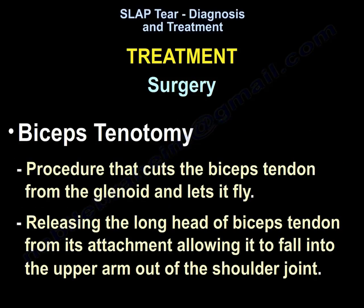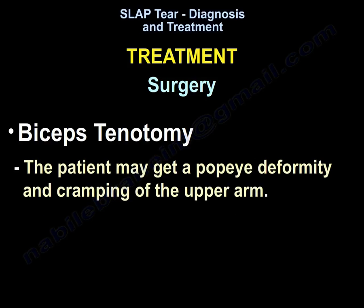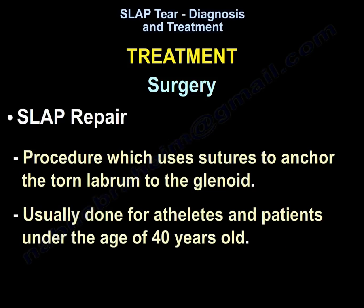Biceps tenotomy is a procedure that cuts the biceps tendon from the glenoid and releases it, allowing the long head of the biceps tendon to fall into the upper arm out of the shoulder joint. Biceps tenotomy is probably suitable for some elderly patients, though the patient may develop a Popeye deformity and cramping of the upper arm. SLAP tear repair uses sutures to anchor the torn labrum to the glenoid, and is usually done for athletes and patients under the age of 40.